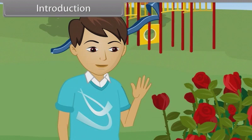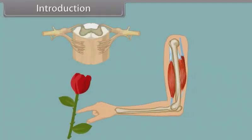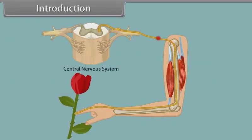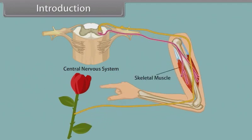Let's see more closely. When he touches the stem of the flower, the thorn on it pinches him and sensors detect stimuli present below the skin. This stimulus passes to the central nervous system and in response, the skeletal muscles contract and he withdraws his hand. Throughout this module, we learn neural control and coordination.